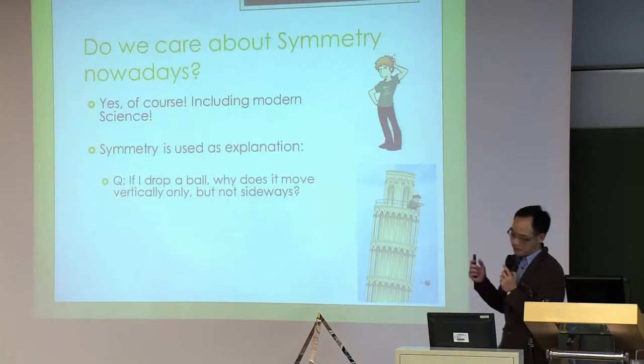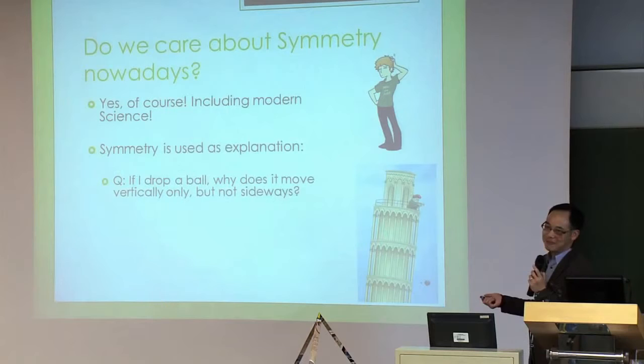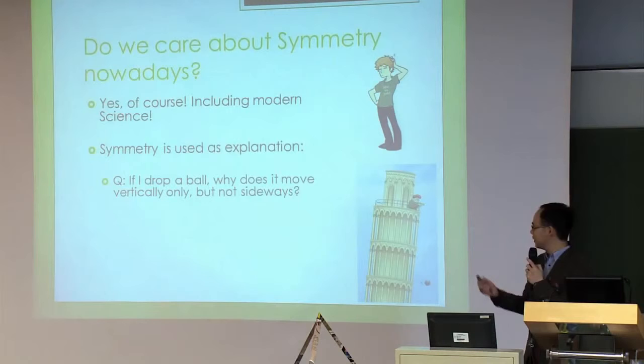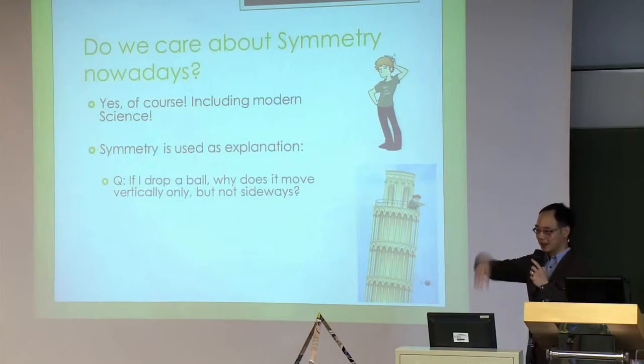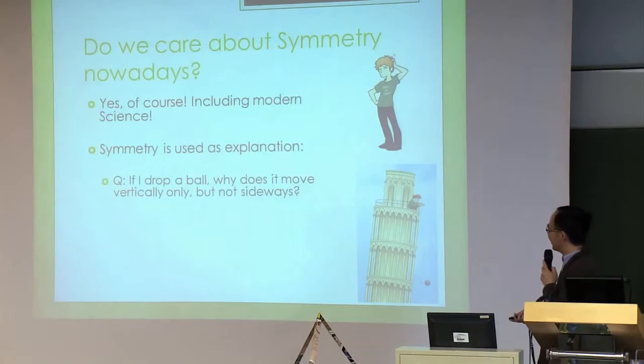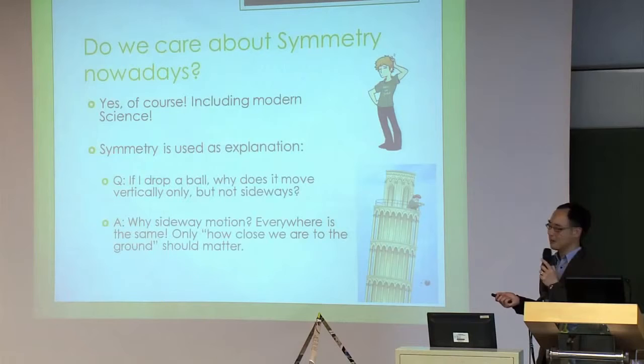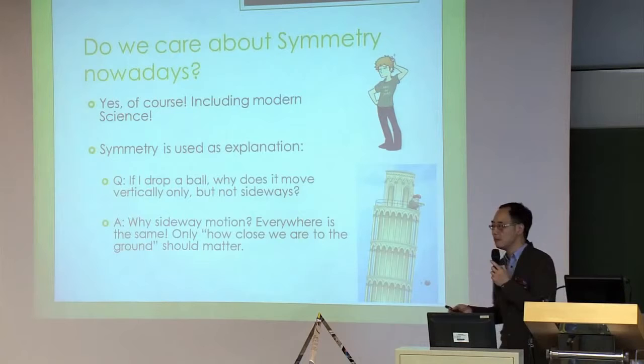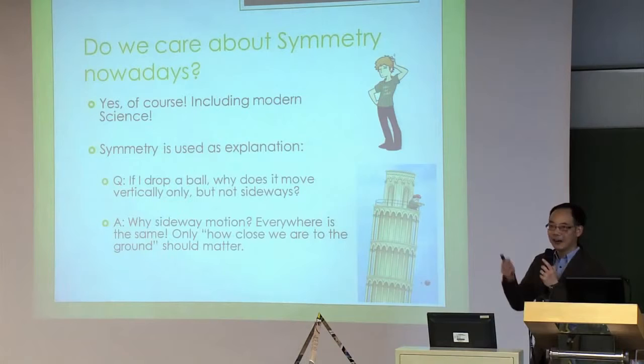For example, if someone goes to the top of a tower and drops something to the ground, you may ask: if I drop a ball, why does it move vertically only, and not sideways? You can use a symmetry argument to quickly answer this question. Of course there should be no sideways motion, because everywhere on the surface looks the same to the ball - so there's no reason for it to move left or right. It will only move down. Only how close you are to the ground matters.